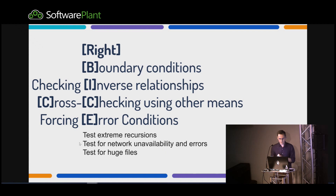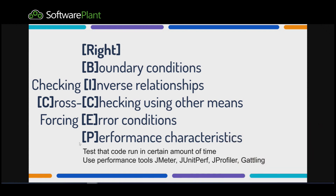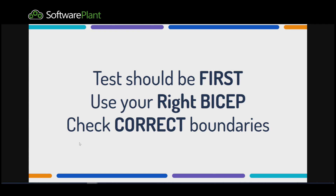And perhaps the most important for us: P for Performance characteristics. There were times when people tested that a method would finish in two seconds as a unit test. But maybe we should use tools like JMeter, JProfiler, or Gatling to check if response times are within bounds — and if not, be aware and consider changing something. We should have defined performance bounds. Remember: tests should be FIRST. Use your Right BICEP and check correct boundaries.